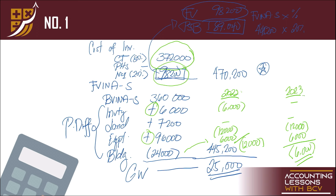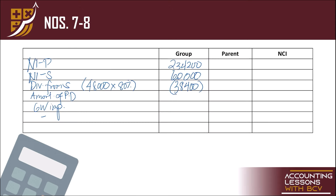No goodwill impairment for 2023. Consolidated net income for 2023 = 249,800. That is number 7. Number 8: attribution to parent and NCI. Net income parent — parent only. Net income subsidiary — 80% kay parent = 48,000; 20% kay NCI = 12,000. Dividends from subsidiary — parent lang tatanggalin. Amortization of purchase differential — 80% kay parent = negative 4,800; 20% kay NCI = negative 1,200. Wala nang impairment. Consolidated net income attributable to parent = 239,000; NCI = 10,800.